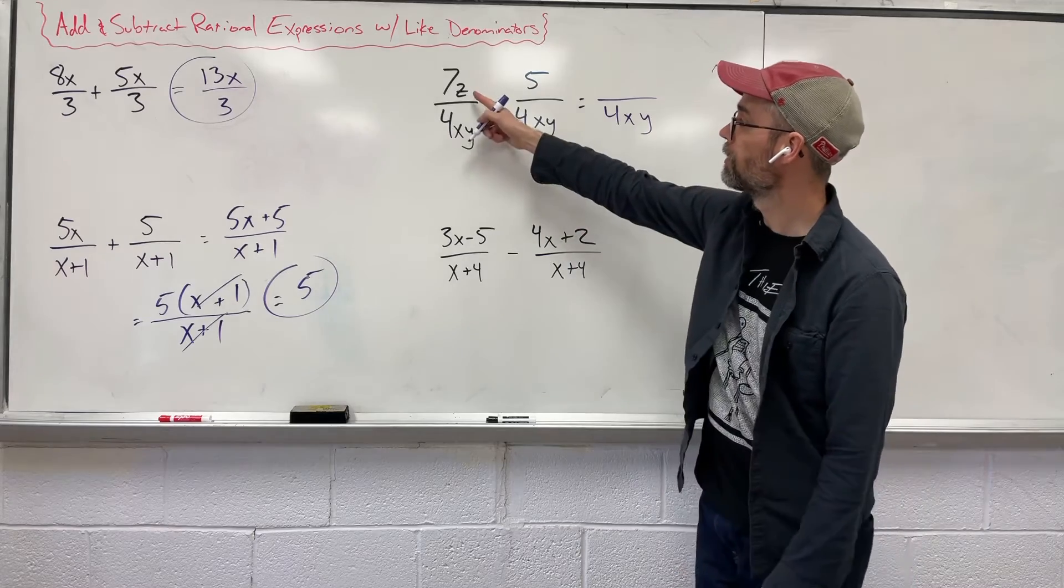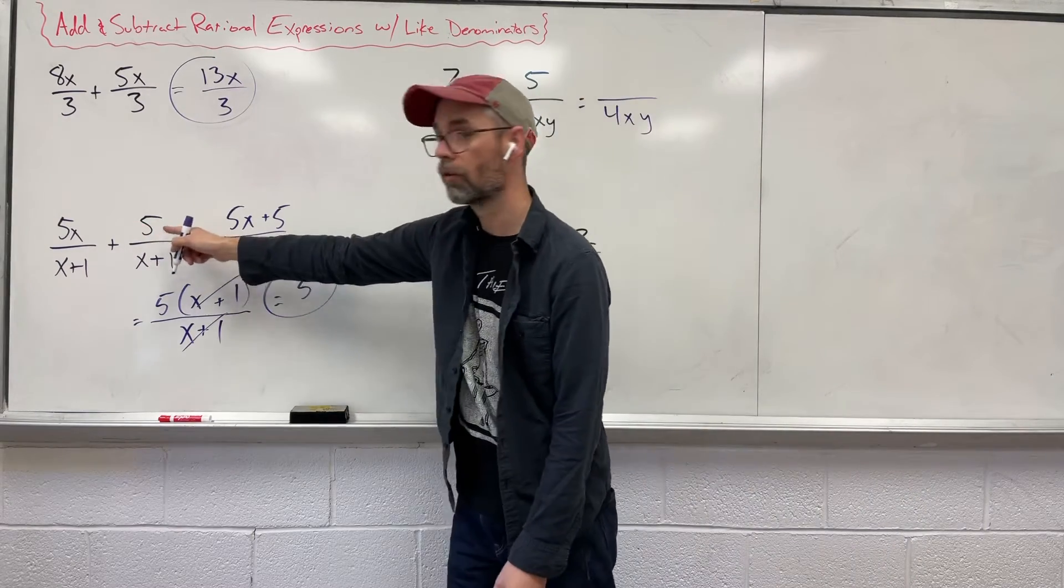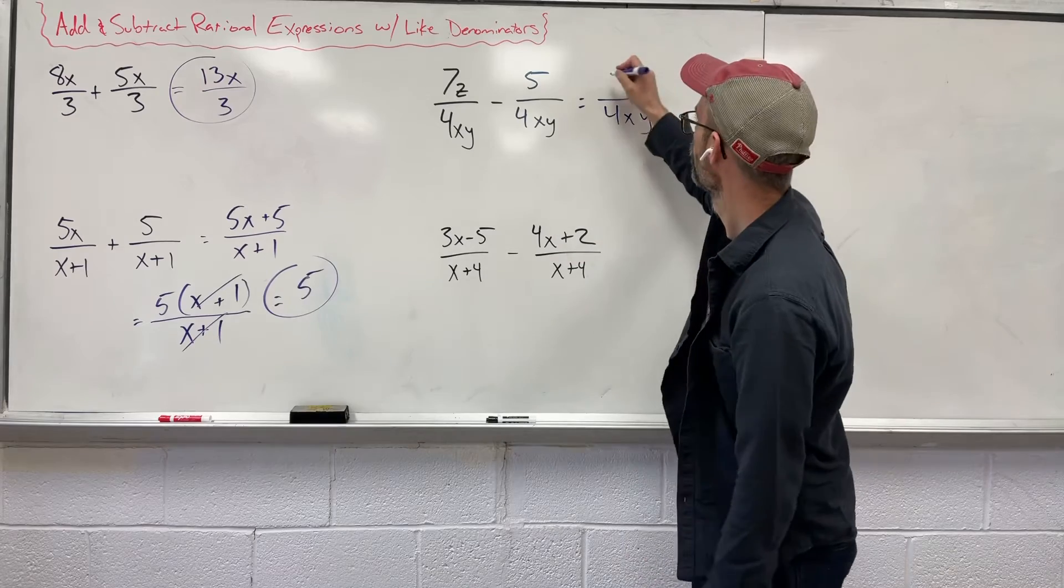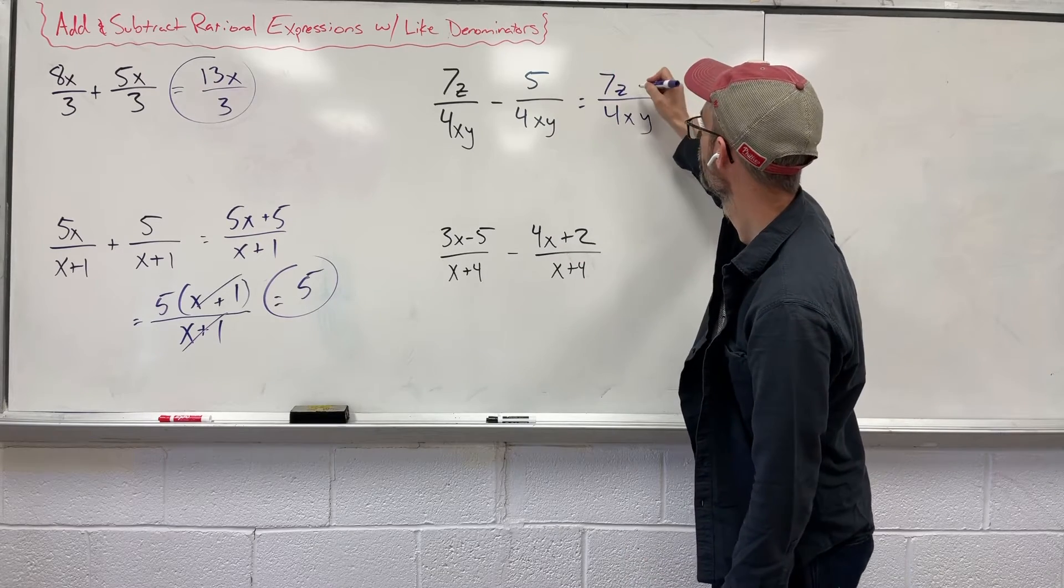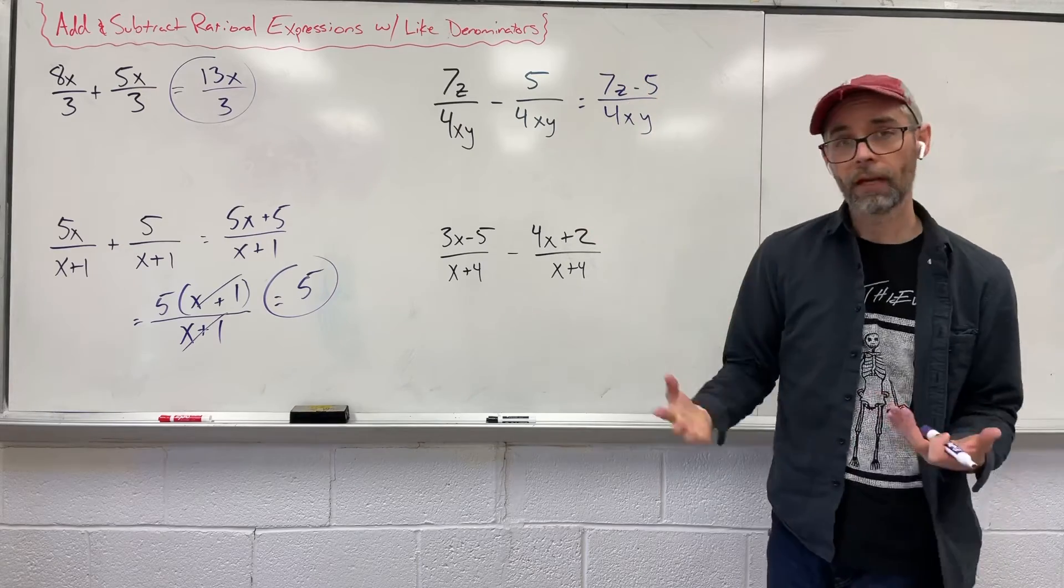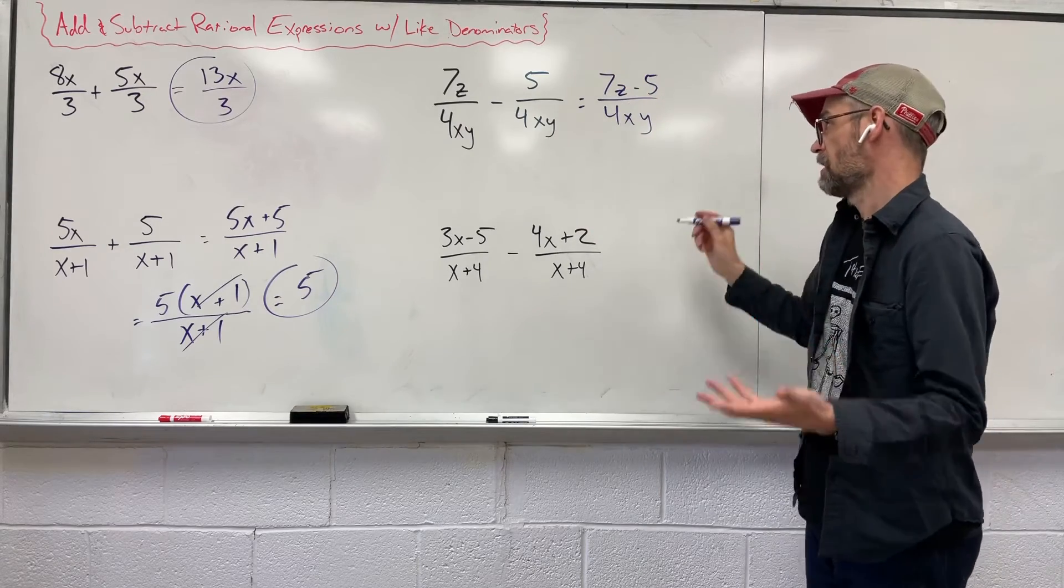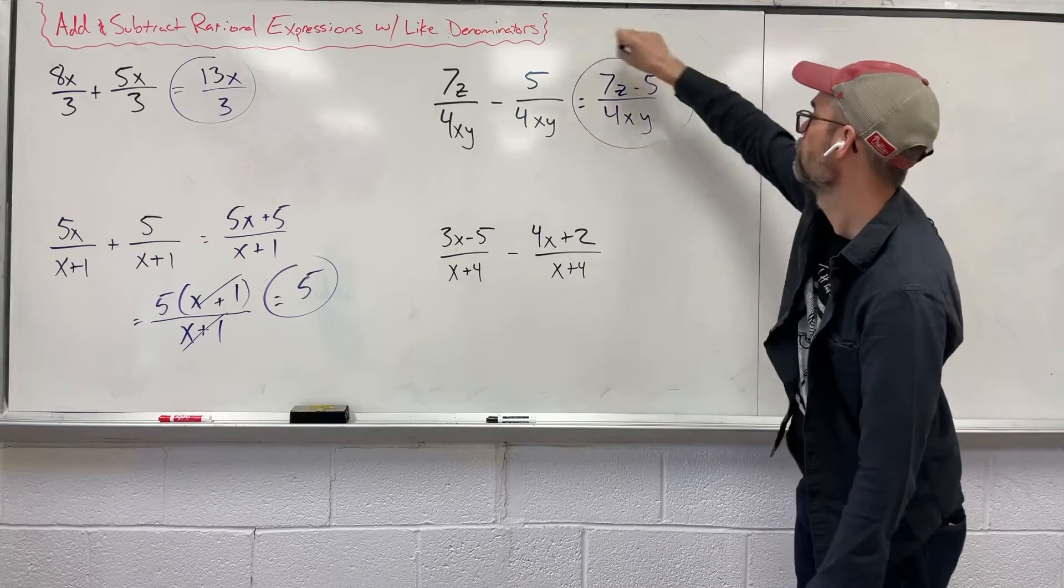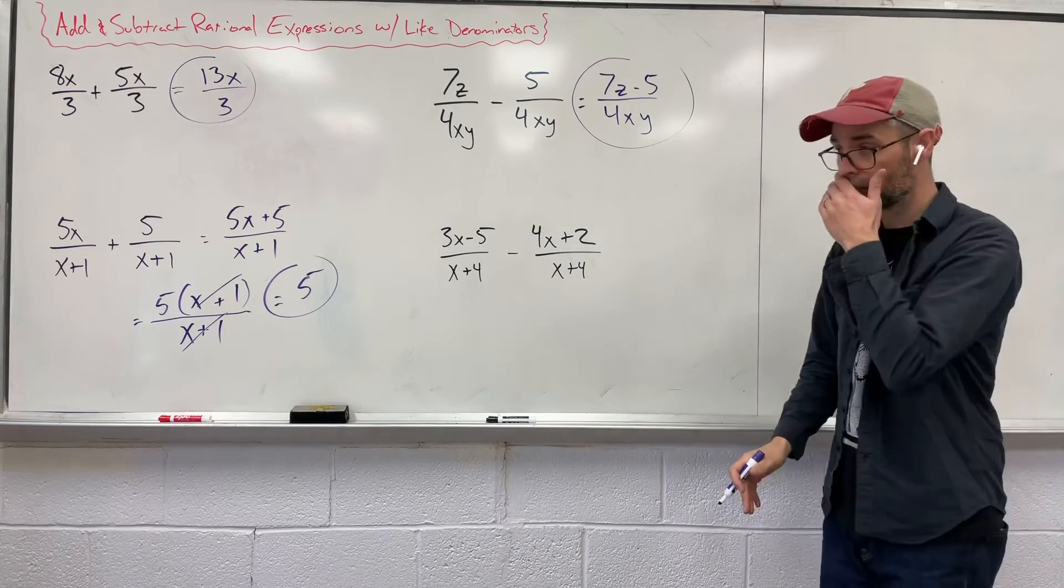Well, this has a z, this does not. I want to do the same thing that I just did over here, where I just put them next to each other. So we're going to say 7z minus 5. 7 and 5, there's nothing I can factor out. And there's nothing they share up and down. It's ugly, but it's simplified.